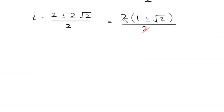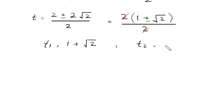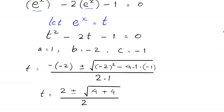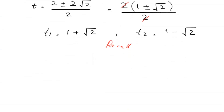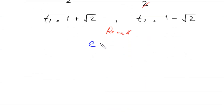Now, the 2 cancels and we get two values of t: t₁ is equal to 1 plus square root of 2, and t₂ is equal to 1 minus square root of 2. Now, recall that we supposed e to the power x is equal to t.